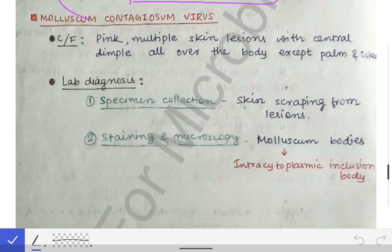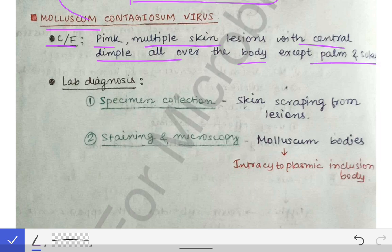The next pox virus is the molluscum contagiosum virus. The clinical features include fever and pink, multiple skin lesions with a central dimple, all over the body except palms and soles. You can remember the classical feature: pink multiple skin lesions appearing like rashes, similar to pox, with associated fever.